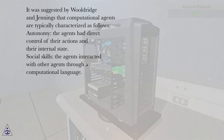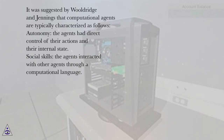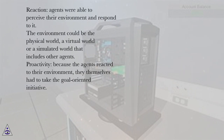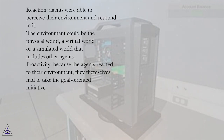Woolridge and Jennings suggested that computational agents are typically characterized as follows. Autonomy: agents have direct control of their actions and their internal state. Social skills: agents interact with other agents through a computational language. Reaction: agents are able to perceive their environment and respond to it. The environment could be the physical world, a virtual world, or a simulated world that includes other agents. Proactivity: because agents react to their environment, they themselves have to take goal-oriented initiative.